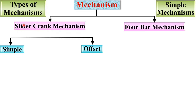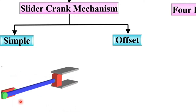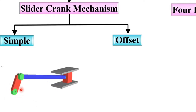Let us see the simple slider crank mechanism. This animation is very helpful to understand it. In this figure there is only one slider, that is why it is called the slider crank mechanism. The red color is the crank which will rotate, and the slider will reciprocate. When you give input to the crank, the rotary motion is converted into reciprocating motion with the help of this simple slider crank mechanism.